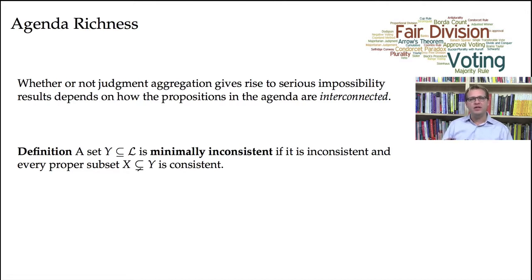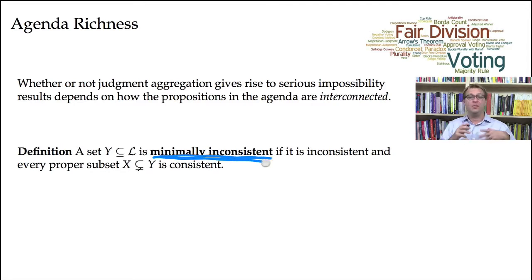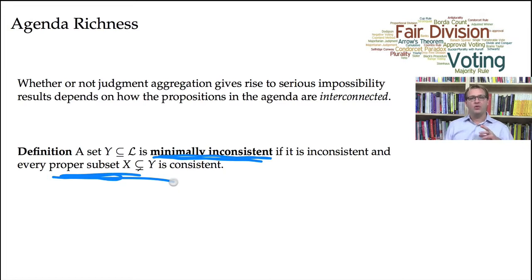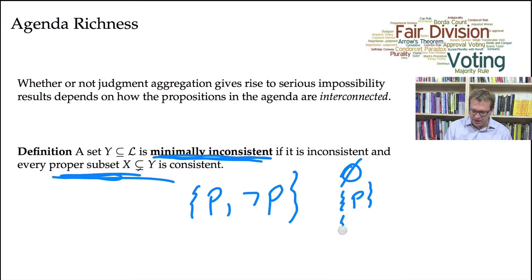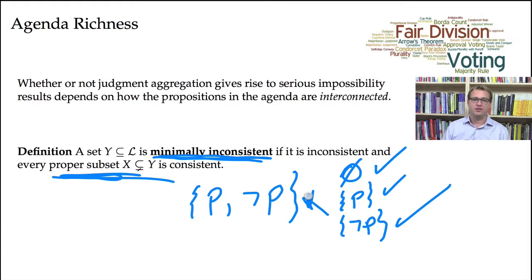I need to give you a few definitions of what it means to say that our agenda is rich. Here's one key notion: we say that a set Y is minimally inconsistent if it's inconsistent — meaning it's impossible to make all of the formulas in Y true at the same time — but every proper subset is consistent. A simple example of a minimally inconsistent set is just {P, ¬P}. The proper subsets are the empty set, {P}, and {¬P}, each of which is consistent, but the set itself is inconsistent. You're just on the verge of being inconsistent; if you throw out one element, you become consistent.